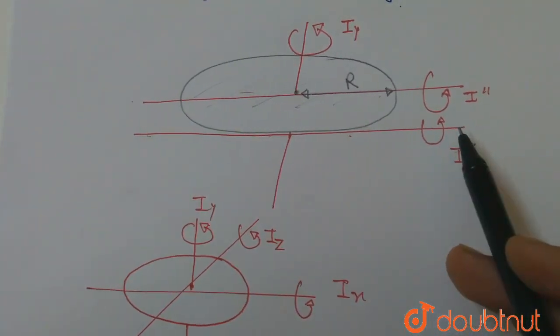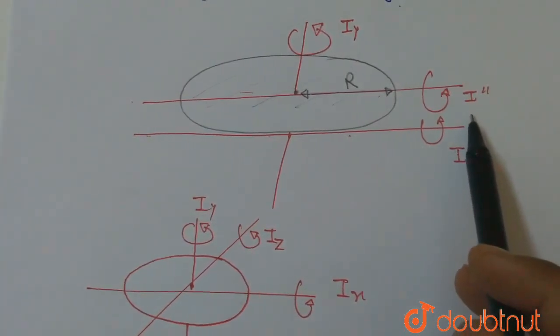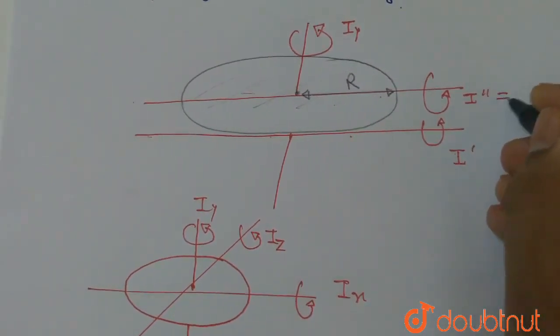The question asks about the diameter and tangential axes, I-dash and I-double-dash. So this is what we need to find.